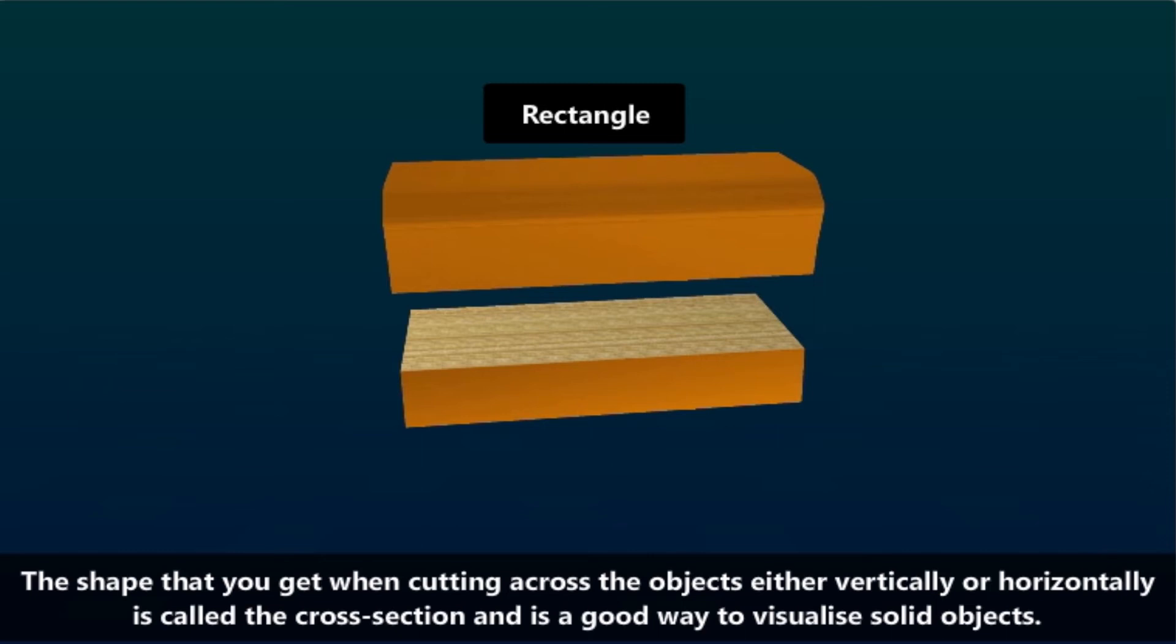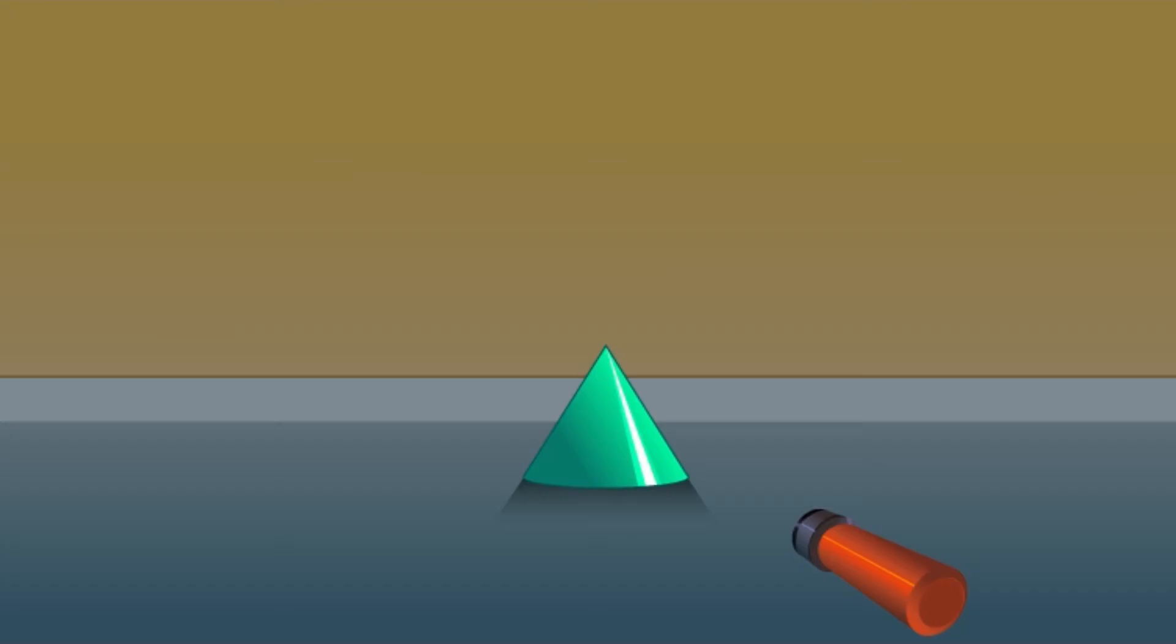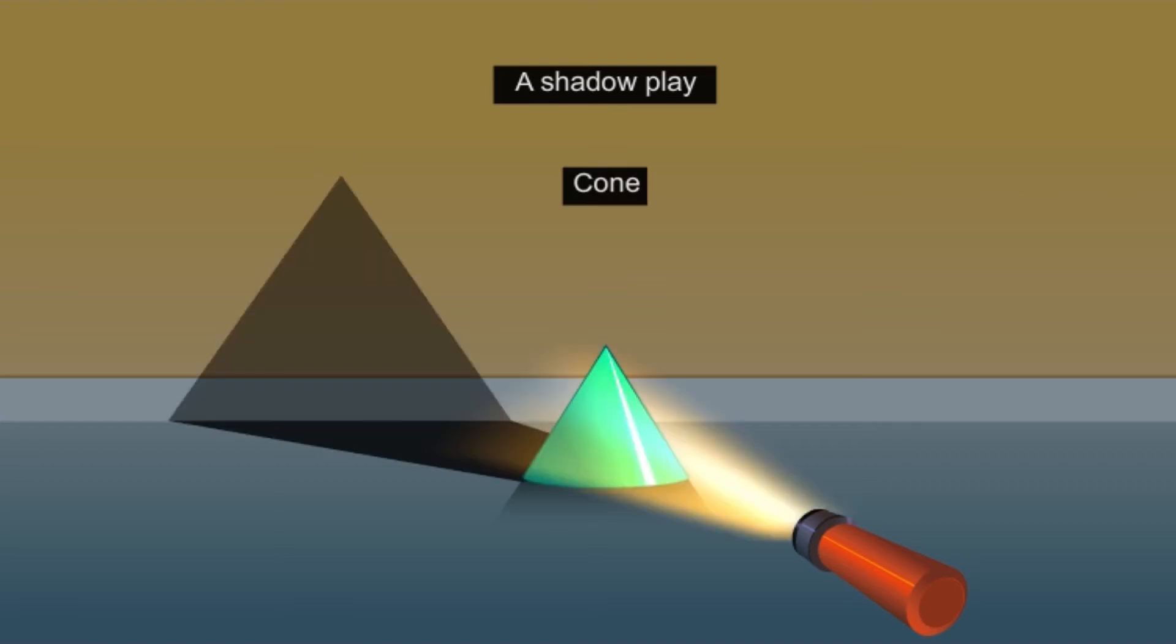It is a good way to visualize solid objects. Let us now look at another technique of visualizing solid objects, which is shadow play. For this, let us place a cone and observe the shadow formed on the wall behind when light from a torch falls on it.